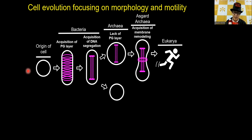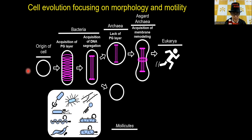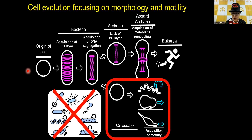Some bacteria quit the cell wall because cell wall is sometimes the target of the natural immune system of the host, so they became mollicute-like bacteria. Most bacterial motility depends on the cell wall, so the mollicute bacteria lost motility systems, but instead they developed their own motility systems — as many as three types — because motility is a determinant for their survival.